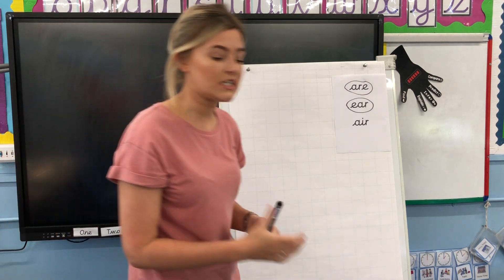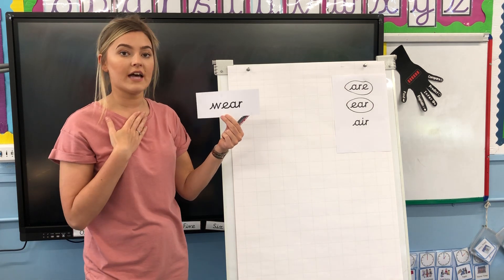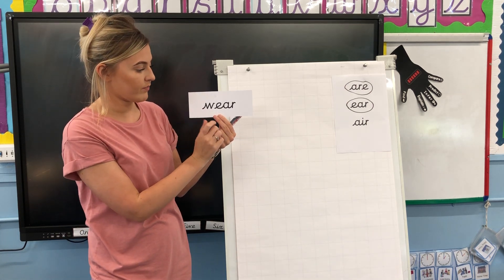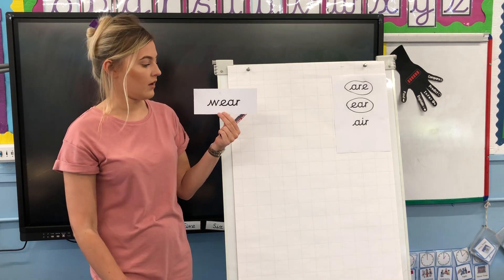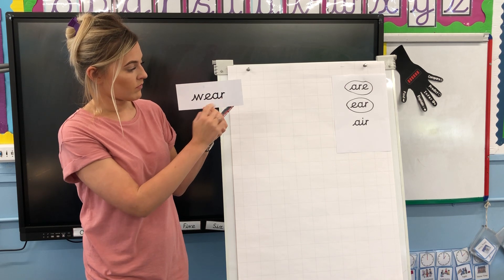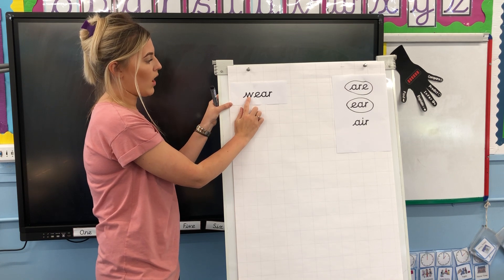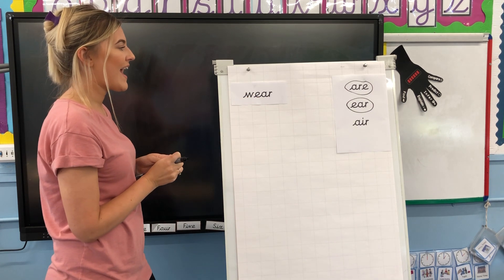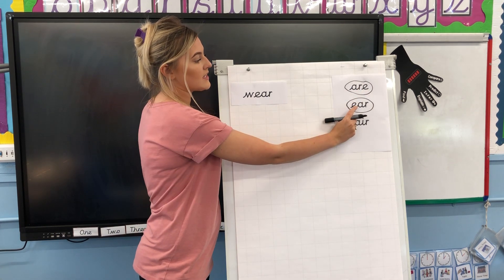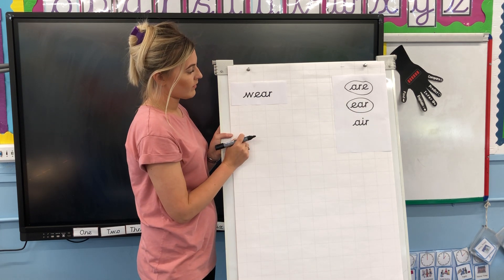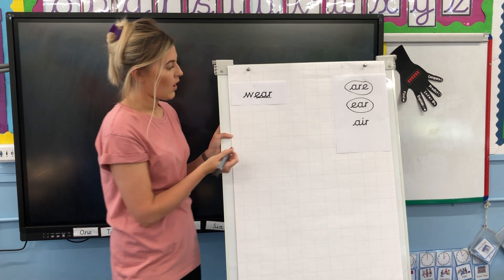We are going to start off with reading some words. Here is a word. I'm going to have a go at reading it, then I'd like you to have a go at home. W-Air: Where. Your turn. Excellent. Have a look closely at the word. W-Air: Where. How are we spelling the Air? Are we spelling it with the A-R-E or are we using the E-A-R? Excellent, if you have spotted the E-A-R. Where.